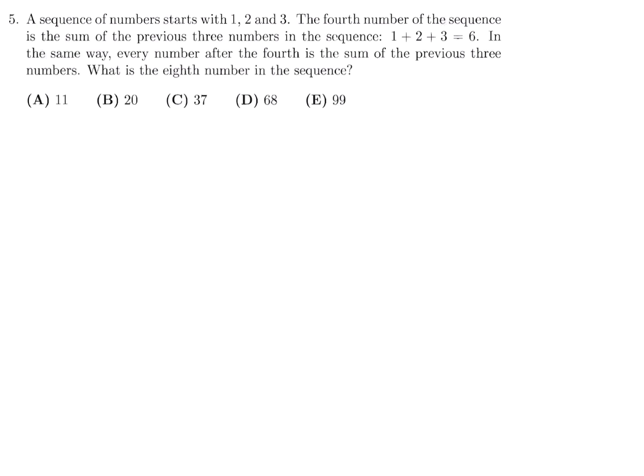A sequence of numbers starts with 1, 2, and 3. The fourth number of the sequence is the sum of the previous three numbers in the sequence. 1 plus 2 plus 3 is equal to 6. In the same way, every number after the fourth is the sum of the previous three numbers. What is the 8th number in the sequence? The first number is a 1, then a 2, then a 3, and then a 6. And how you get the next number is by adding the previous three. So 2 plus 3 plus 6 is 11. How do you get the next number? You add the previous three. So 3 plus 6 plus 11 is 20.